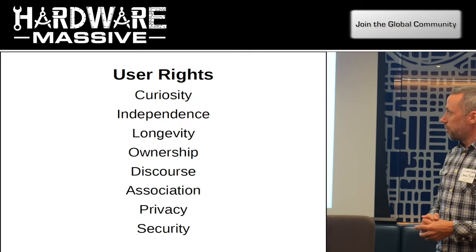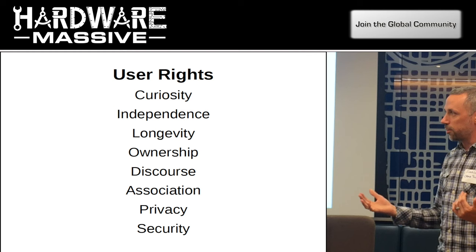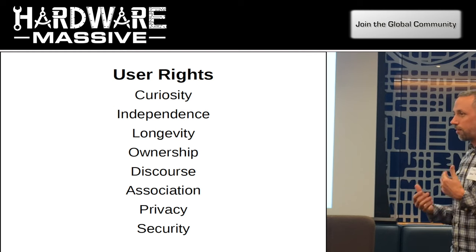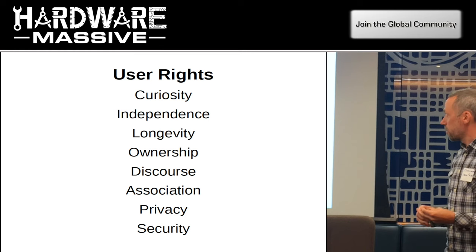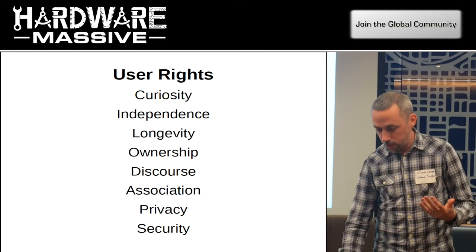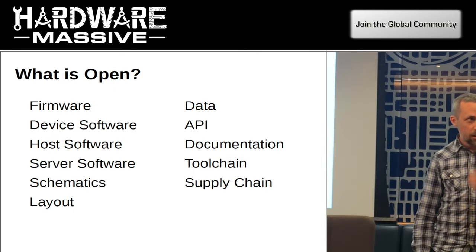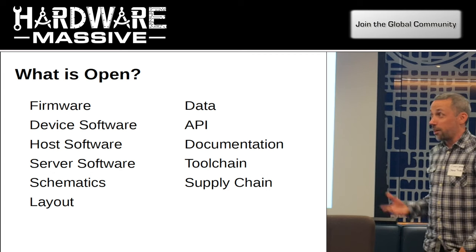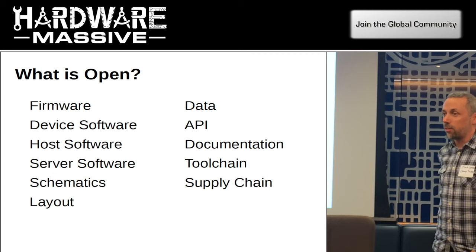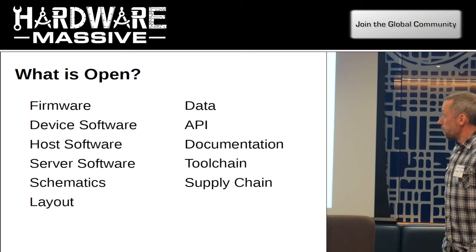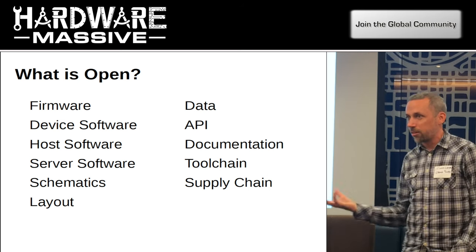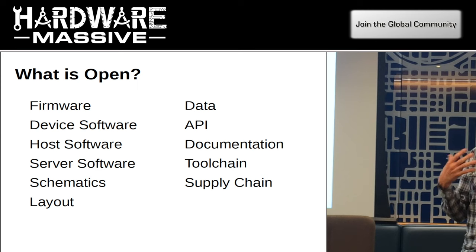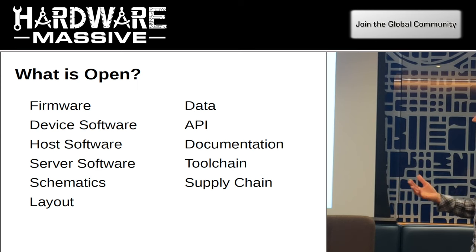We'll be announcing this more broadly and publicly on the website soon. It applies to every sort of product. We specialize in hardware — 99% of what we do is hardware, the other 1% is software associated with hardware. The notion of open source is intimately connected with these rights — openness conveys these rights in some ways. But what exactly does open source mean when it comes to hardware?